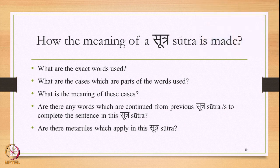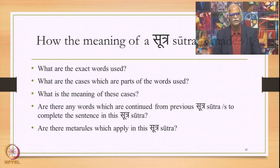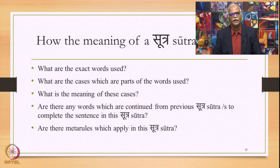In studying these sutras, we will also study a particular method of making the meaning of a sutra in the Ashtadhyayi. This method involves the following steps. First, we ask: what are the exact words used in the sutra? In the sutra, words are uttered with close proximity resulting in euphonic combinations. So first we need to dissolve all those combinations and get the exact words, so as to remove any ambiguity.